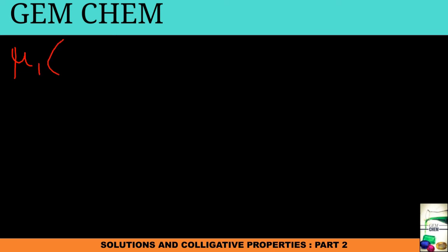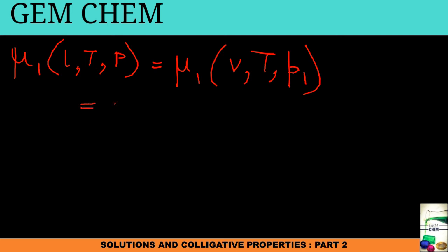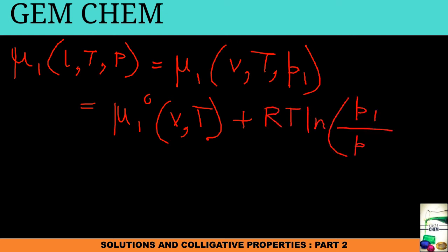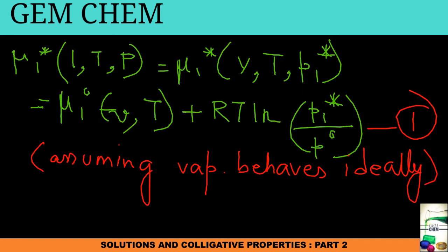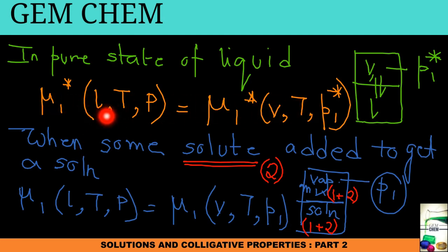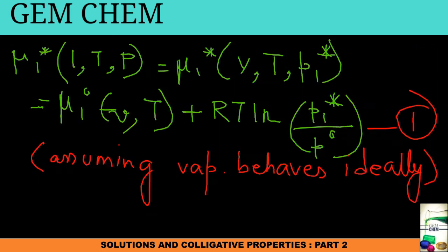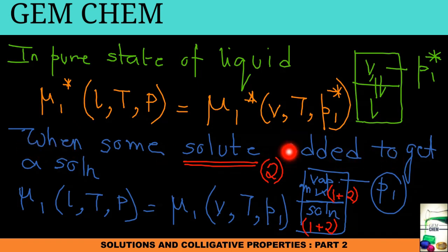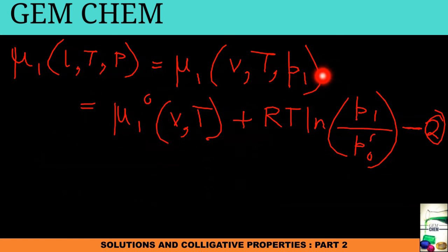Now for the solution with solute added: mu-1 liquid at T and P equals mu-1 vapor at T and p1 equals mu-1-zero vapor at T plus RT ln(p1 / p0). This is equation 2. To summarize: equation 1 is for the pure liquid state with pressure p1-star, and equation 2 is for the solution with solute added at pressure p1. We have substituted the thermodynamic expression for chemical potential in both cases.